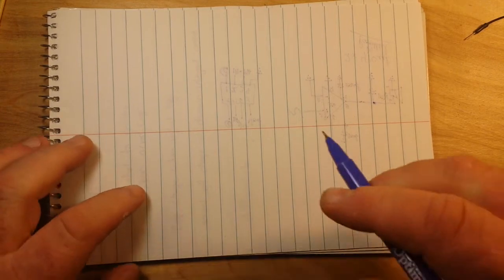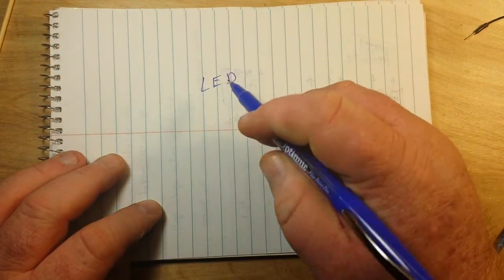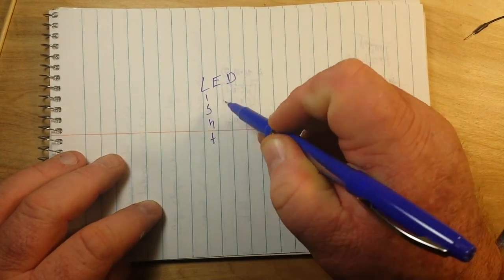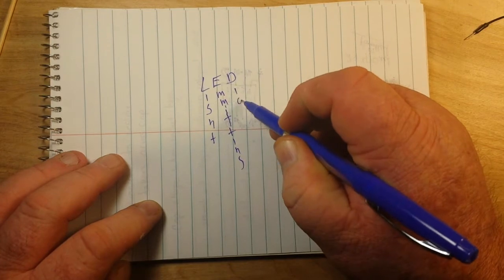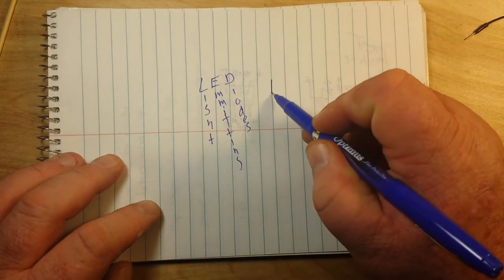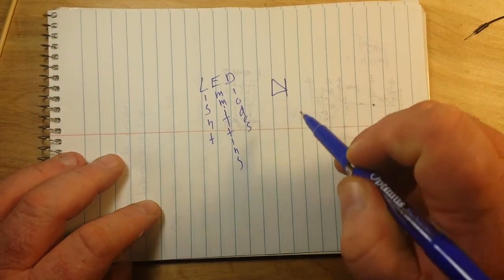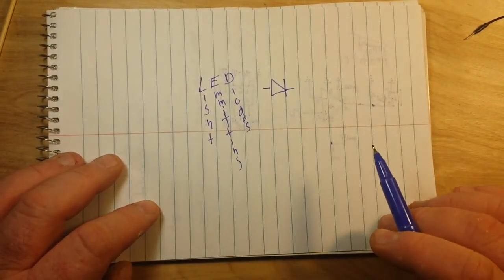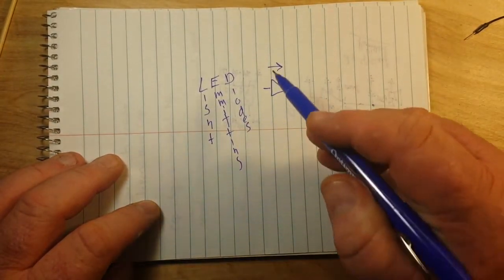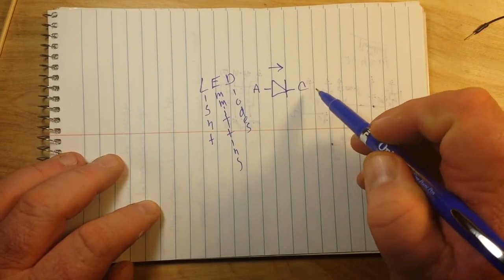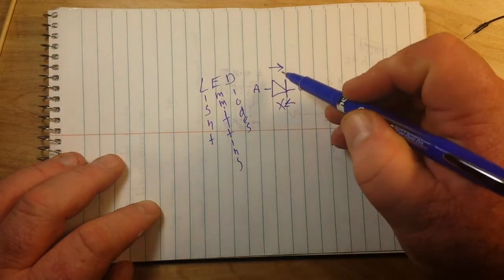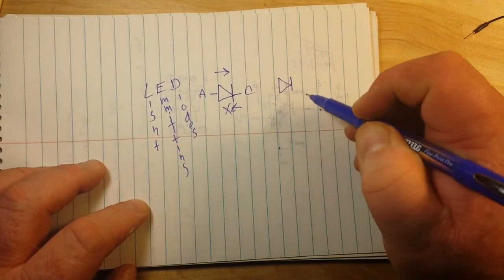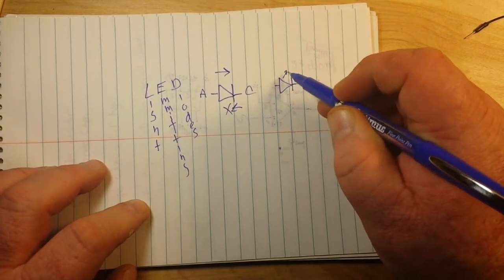If I can find my pen. Okay, LEDs are light emitting diodes and a diode, this is the symbol for a diode, is basically a one-way valve. Current can pass from the anode to the cathode but it will be blocked in the reverse direction.